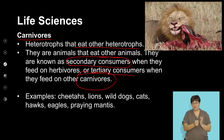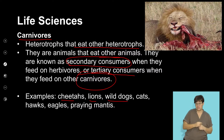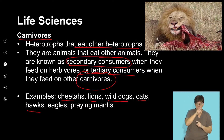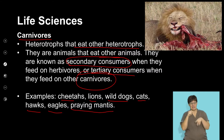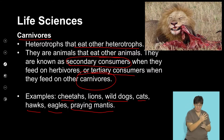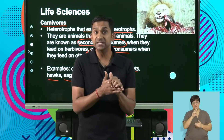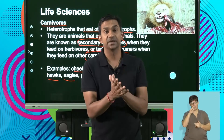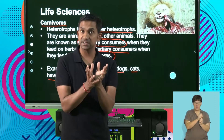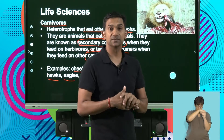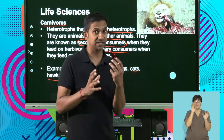Examples of carnivores are cheetahs, lions, wild dogs, many cat species, hawks, eagles, and even some insects are carnivorous. We also have some plants that are carnivorous — the example would be the Venus flytrap, a plant that produces enzymes that allows it to consume some of the insects that visit it.